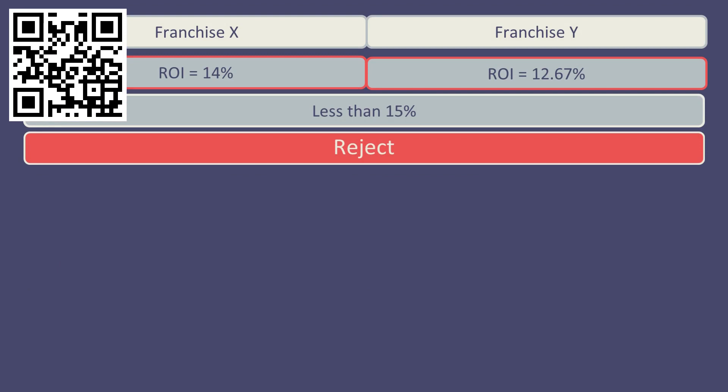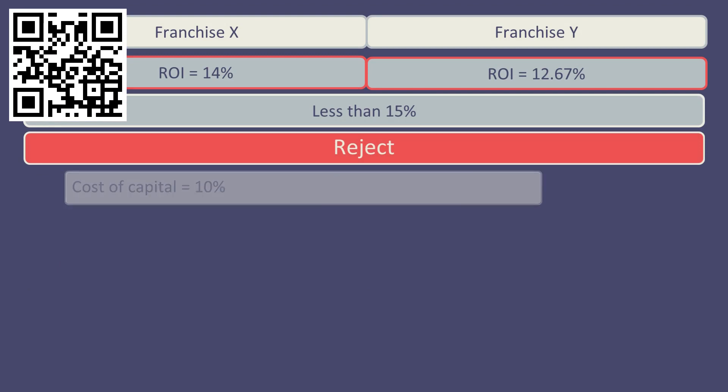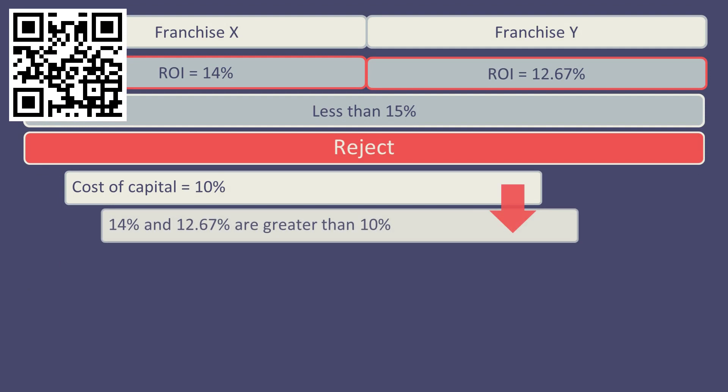If either investment were accepted, then the overall return on investment of that franchise would be reduced, which would not be in the interests of that franchise or division manager. Given that the cost of capital for both divisions is 10%, it can be argued that both investments should be accepted, as it would benefit the company as a whole.